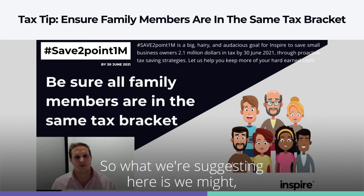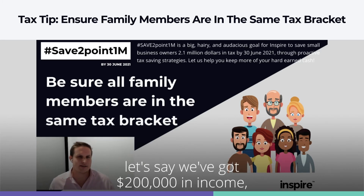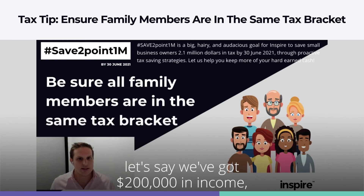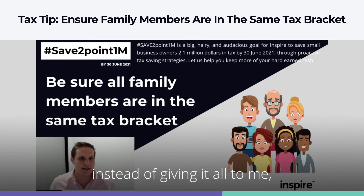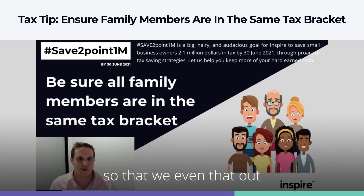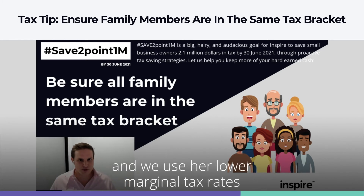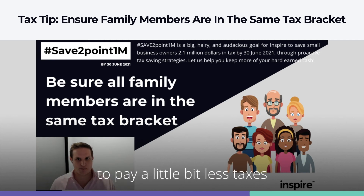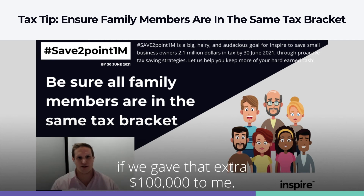So if we have $200,000 in income, instead of giving it all to me, we might give $100,000 to me and $100,000 to her — evening it out and using her lower marginal tax rates to pay a little bit less tax than if we gave that extra $100,000 to me.